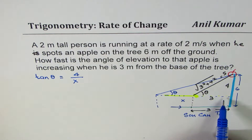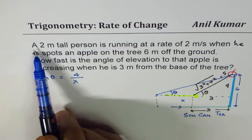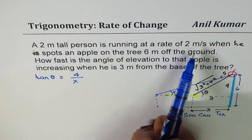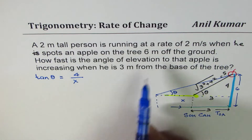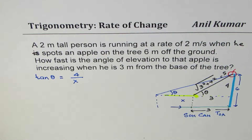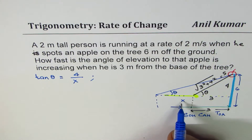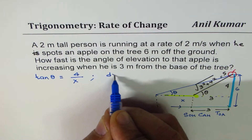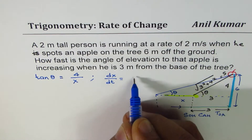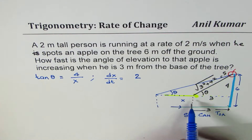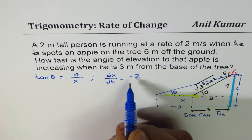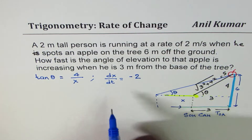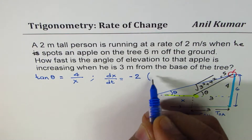A 2-meter tall person is running at a rate of 2 meters per second. So we are given dx/dt, which equals 2 meters per second. You can see that the distance decreases as the person approaches the tree. Therefore, it may be a good idea to use minus here — minus 2 for dx/dt — since distance is decreasing.